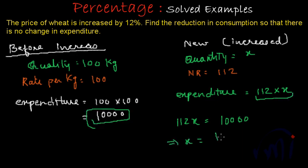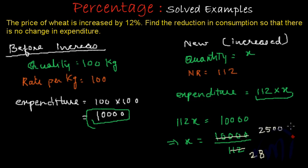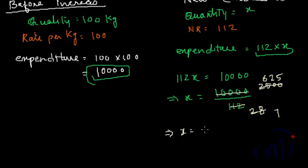Since total expenditure will be equal, 112X = 10,000. From here, X = 10,000 ÷ 112. Since 112 is divisible by 4: 10,000 ÷ 4 = 2,500 and 112 ÷ 4 = 28; dividing again by 4 gives 625 ÷ 7. So the new quantity X = 625/7, which equals 89 and 2/7.